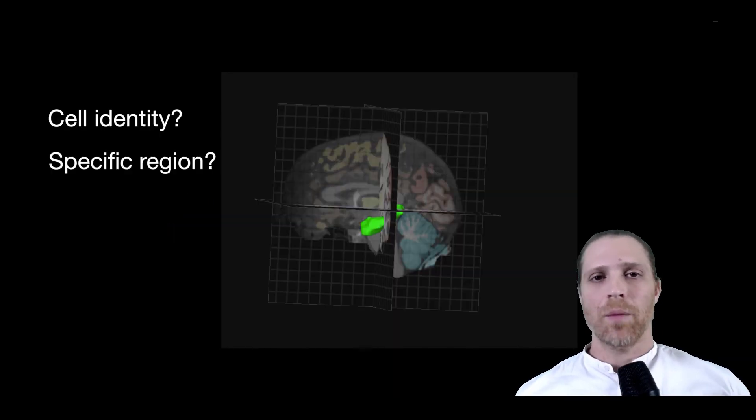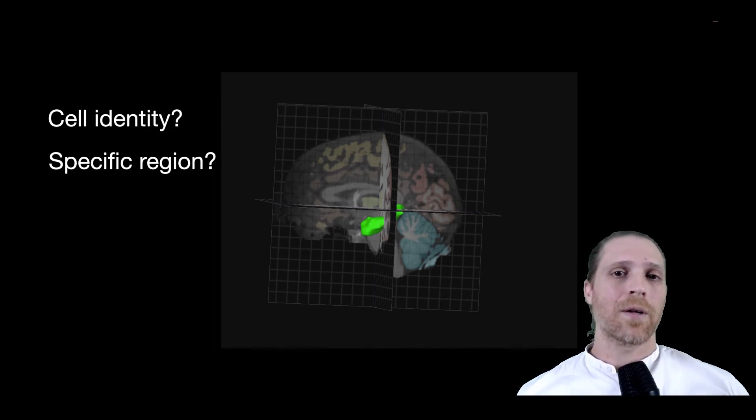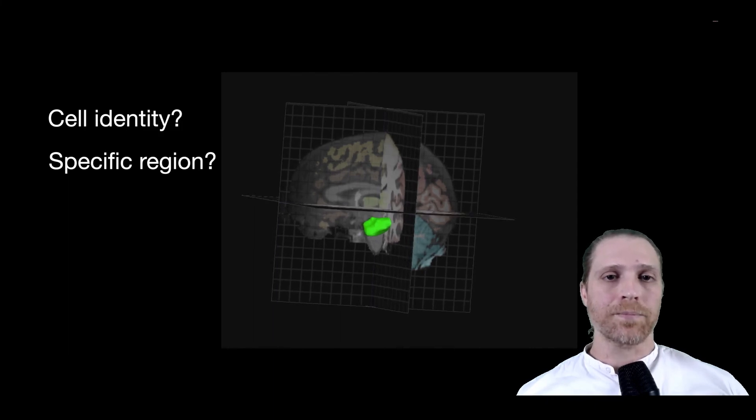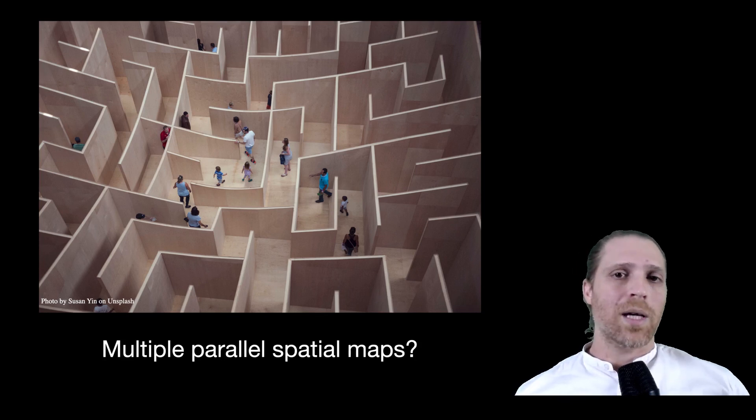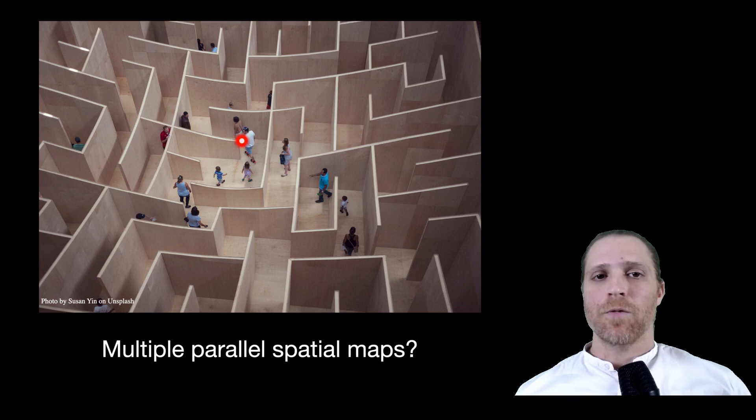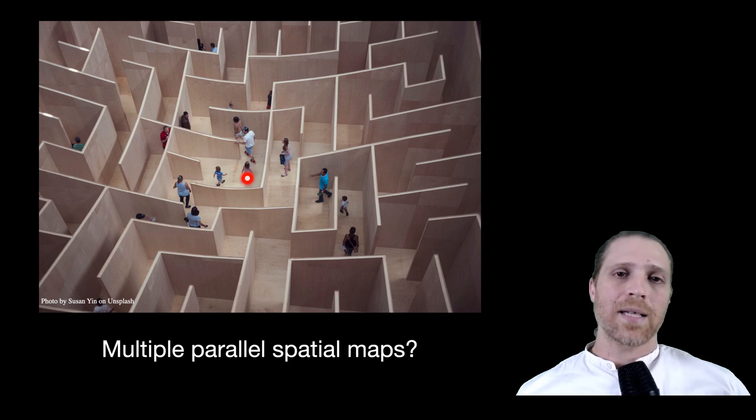And so, while investigators were able to show that humans can encode the border in their environment as well as when someone else is located at a border, they still don't know the identity of the cells that participate in this process, as well as the specific sub-region of the medial temporal lobe, or perhaps even within the hippocampus, that is involved in this process. Another important and interesting issue that future studies will help to answer is whether, during a navigational task, we are able to encode the presence of multiple individuals next to borders in the environment, or in other words, assess whether there are multiple parallel spatial maps encoded in our brain.